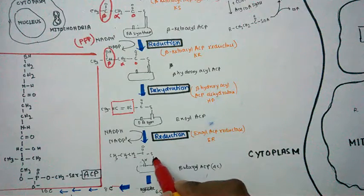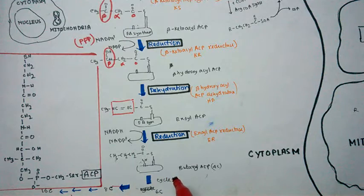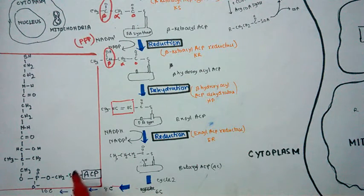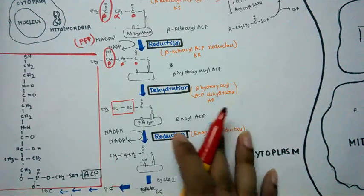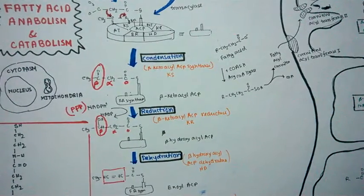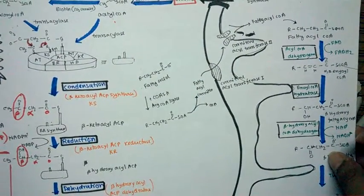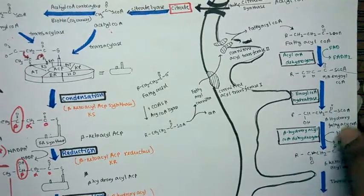The whole cycle is then repeated multiple times. After the first cycle the chain has four carbons; after two cycles it has six, then eight, and so on up to sixteen carbons, forming palmitic acid. This is how fatty acid anabolism takes place in the cytoplasm of the cell.